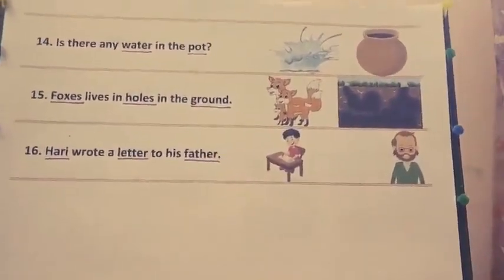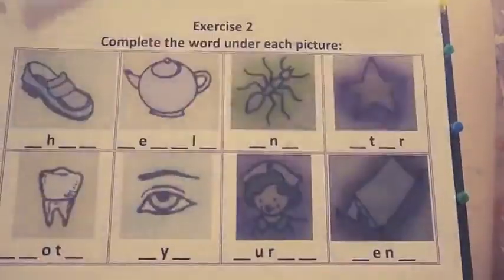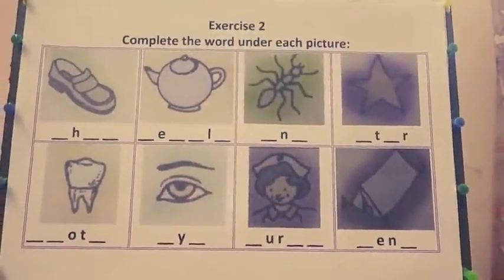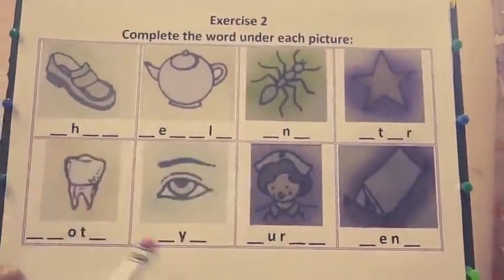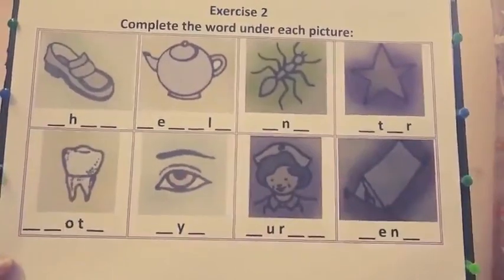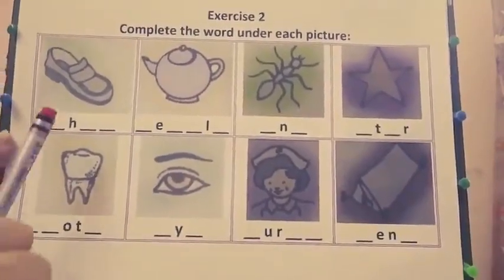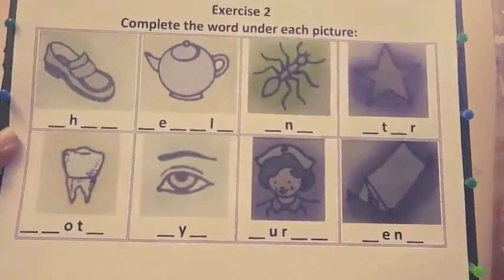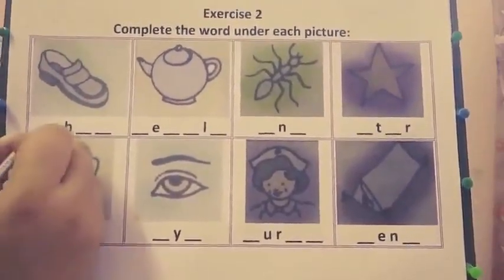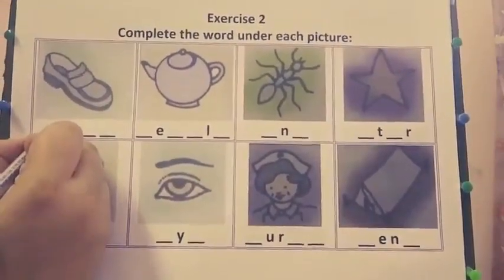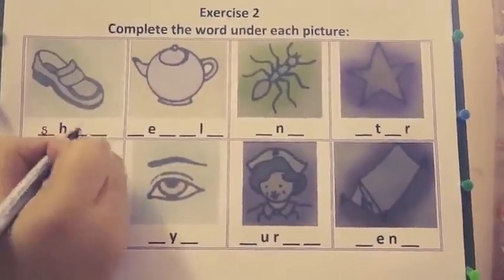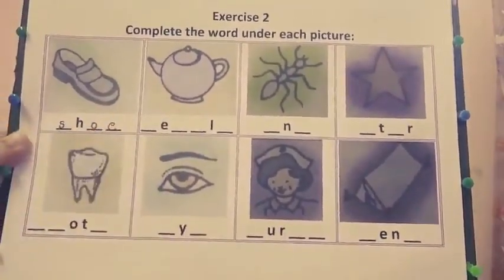Now the first exercise is completed. Come to the second one. In the second exercise, there are different pictures and we have to complete the missing letters. Seeing the first picture — it's a picture of a shoe. S-H-O-E. Shoe.